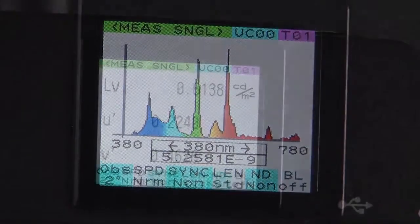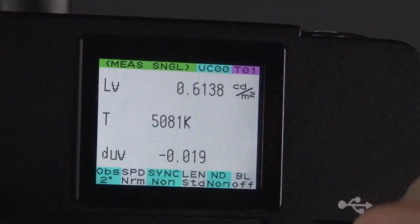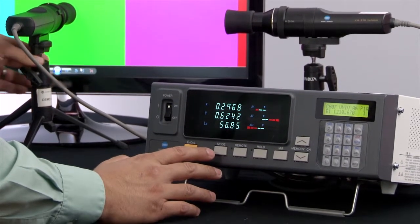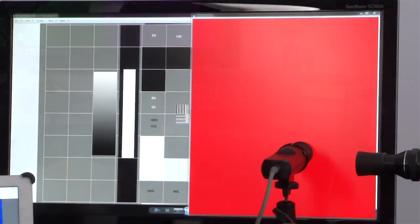Other instruments can be verified against it or even calibrated against the CS2000. Moving down through production, we offer the CA310, which is capable of 20 measurements per second for luminance and color.